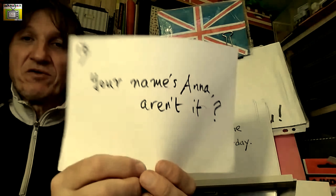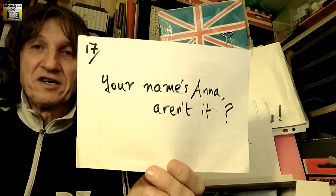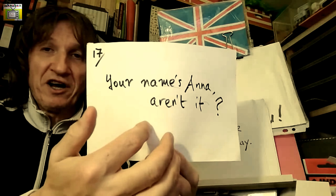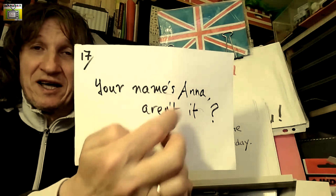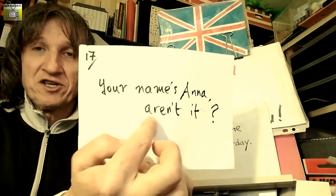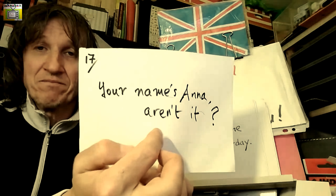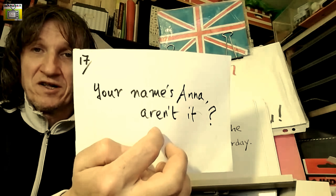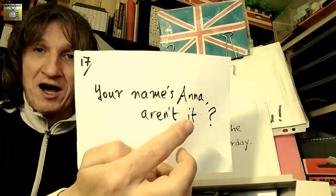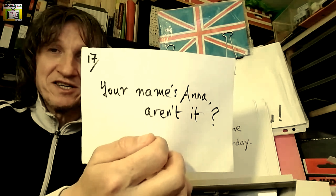Sentence number six: 'Your name's Ann, aren't it?' This is what we call a tag question, used to check information. Bear in mind the main clause is 'your name is Ann', so the tag part should be negative — which it is — but not 'aren't it', it should be 'isn't it'. We wouldn't say 'your name are Ann' but 'your name's Ann'. That is sentence number six.